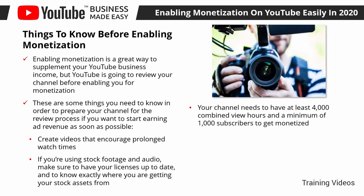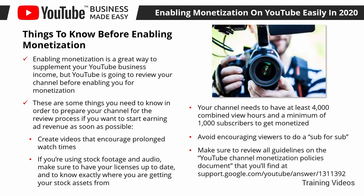These numbers aren't difficult to achieve if you produce quality content. Do an SEO audit on your published videos to optimize your content for maximum visibility. Avoid encouraging viewers to do sub-for-sub — YouTube will deny your application if you use sub-for-sub as an engagement strategy. Instead, call viewers to subscribe, like, and turn on notifications. Make sure to review all guidelines on the YouTube channel monetization policies document at support.google.com/youtube/answer/1311392.